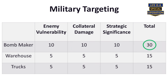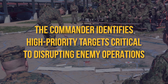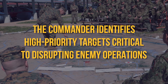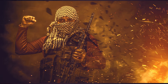Consider a scenario where a military commander faces multiple potential targets in enemy territory. Using a simplified variation of the CARVER Matrix, the commander assesses each target based on factors like enemy vulnerability, collateral damage, and strategic significance. By assigning numerical values and weighting criteria accordingly, the commander identifies high-priority targets critical to disrupting enemy operations while minimizing unintended consequences — literally and figuratively getting the biggest bang for the buck.